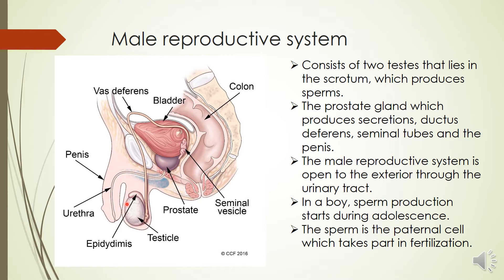In a boy, the sperm production starts during adolescence. The sperm is the paternal cell which takes part in fertilization. So the main part of the male reproductive system is the production of sperm, which is done through the testicles.